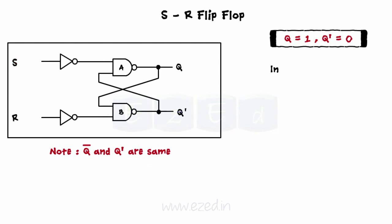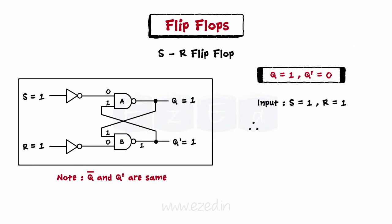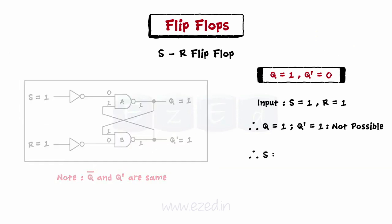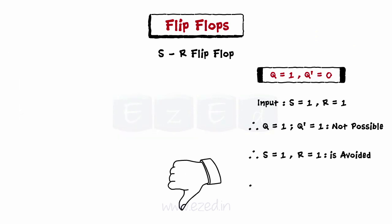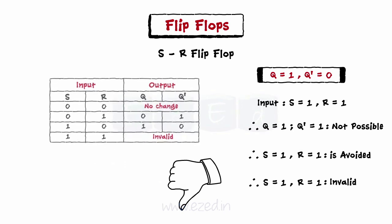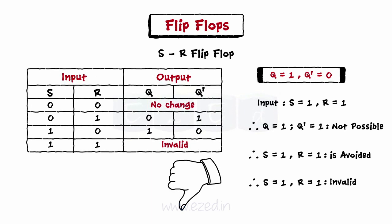Let's discuss the last case where S equals 1 and R equals 1. With Q equals 1 and Q dash equals 0, applying all inputs to both gates makes both outputs 1. Since Q and Q dash are complements of each other, they can't have the same value simultaneously. Hence, this combination of inputs should be avoided. This is the major drawback of SR flip-flop — we can't have S equals R equals 1. Based on our results, we can draw a truth table for SR flip-flop.